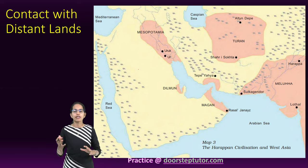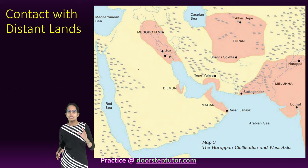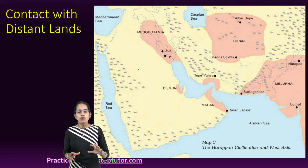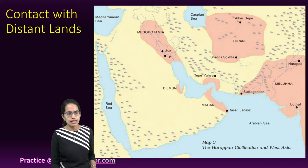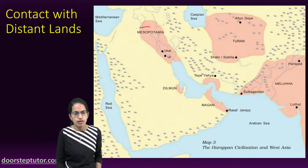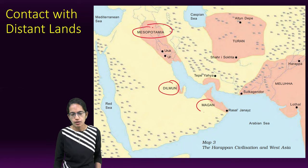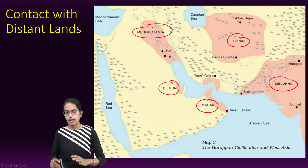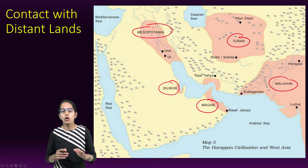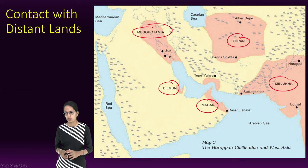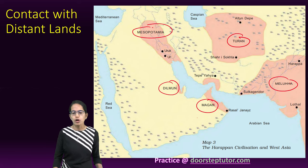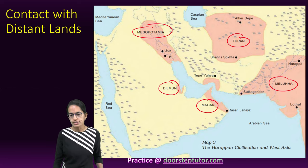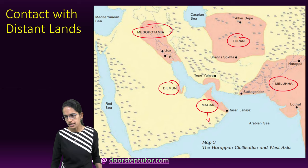Now we would see how there were contacts that were done with distant lands. A few of the major areas were Mesopotamia, Dilman, Magan, Meluha, and Turan — these were the major areas where contacts of Harappan civilization were found. Copper was brought from Oman, which was also called Magan.